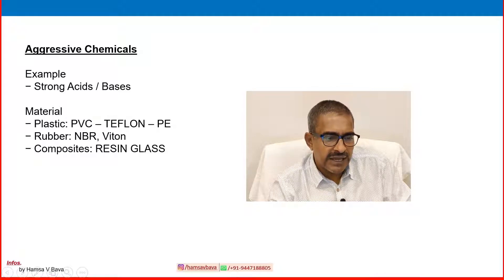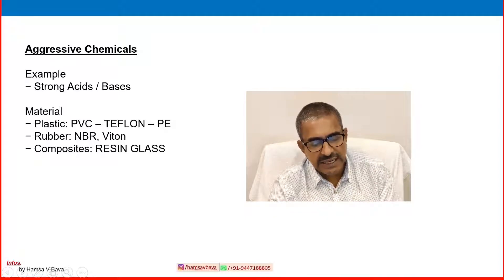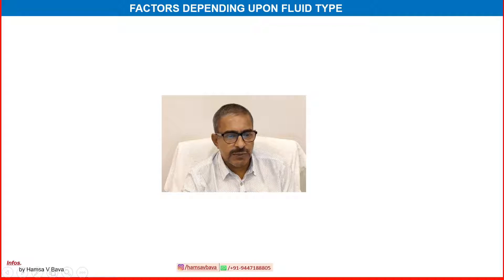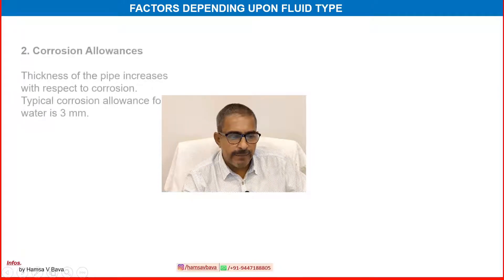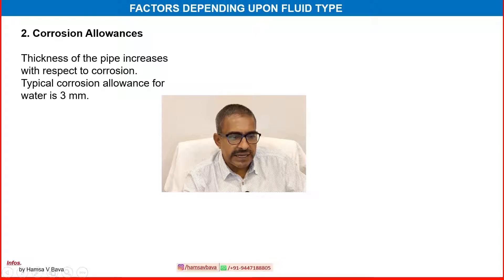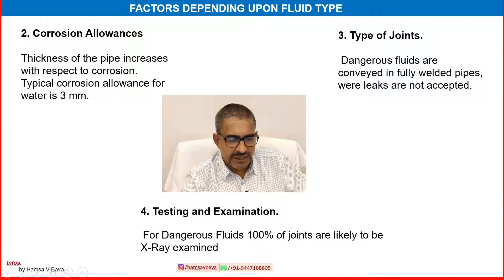For aggressive chemicals such as strong acids and bases, materials used are plastics — PVC, Teflon, polyethylene — rubber and other rubber linings, and composite resin glass. Corrosion allowance is another important design parameter: pipe thickness increases to account for corrosion, and a typical corrosion allowance for water is 3 mm. For joint type, dangerous fluids are conveyed in fully welded pipe where leaks are not accepted, and 100% of joints are likely to be X-ray examined.